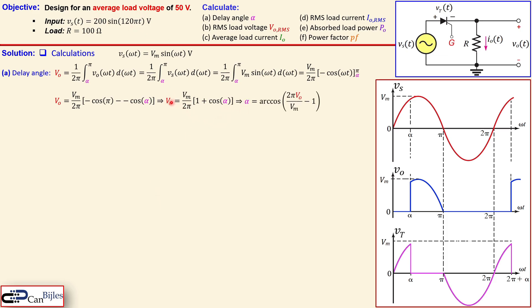We rearrange to solve for alpha: multiply both sides by 2π, divide by Vm, subtract 1, and take the inverse cosine (arccos). This gives alpha = arccos((2π·Vo / Vm) − 1). Substituting Vo = 50 V and Vm = 200 V, we get alpha = 0.9633 radians, which in degrees is 55.90°. This is the delay angle we need to wait before firing the thyristor gate.